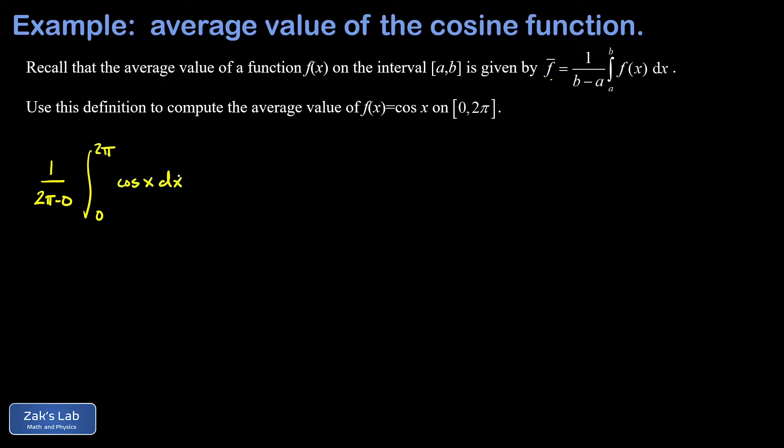We can write that as one over two pi times the anti-derivative of the cosine, which is sine x, evaluated from zero to two pi. Plugging in the upper limit I get the sine of two pi.